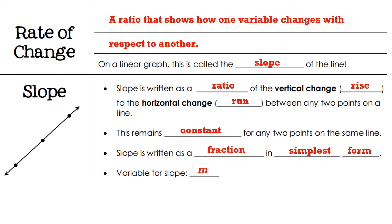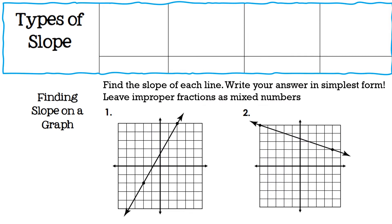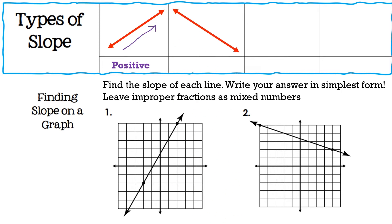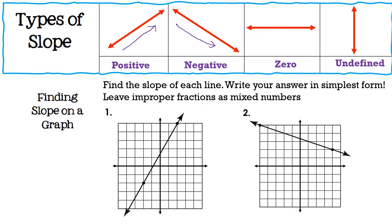Let's look at the types of slopes. First, a line that goes up from left to right is a positive slope — since we read from left to right, if the line increases, the slope is positive. Next, a line that falls from left to right, or decreases, is a negative slope. A horizontal line has a zero slope, and a vertical line has an undefined slope — we'll see why when we do the examples.